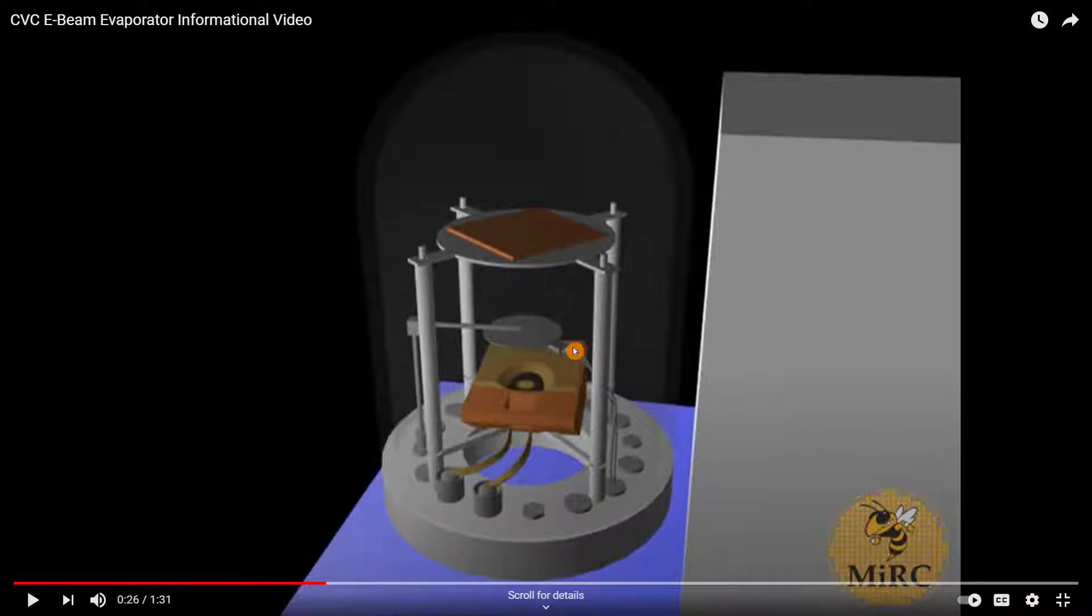This monitors the film thickness. You have a shutter that you can open and close. Your substrate is loaded on the holder on the top, and then the evaporation starts, going up and condensing as a film on the substrate.